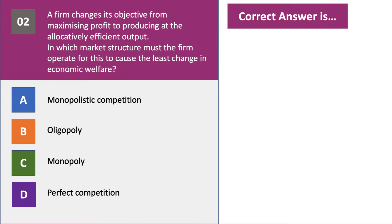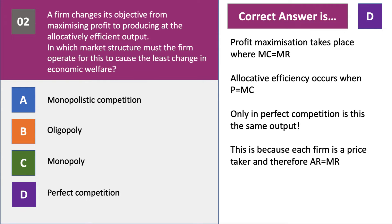Here's a change of objective from profit maximization to allocative efficiency. When will this lead to no change in welfare? The answer is D — it'll have no effect in a perfectly competitive market. The reason is that the outputs of the two objectives are the same: profit maximization where MC meets MR, and allocative efficiency where price equals marginal cost. In perfect competition, price equals marginal revenue, and therefore marginal revenue equals marginal cost at the same output. In options A, B and C, you'd expect prices to fall and output to rise, which would affect welfare.